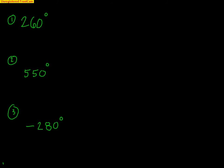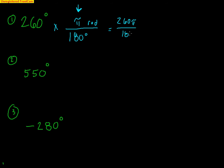Let's do some conversions. To convert 260 degrees to radians: multiply by π radians over 180 degrees so the degrees cancel. I get 260π over 180. Now I want to reduce this — and I always say hold the pi, like holding dessert till the end. On my calculator, I type 260 divided by 180 without the π, and convert to a fraction. It reduces to 13 over 9. So I get 13π over 9 radians, which is approximately 4.54 radians.